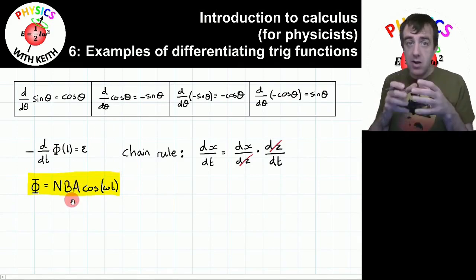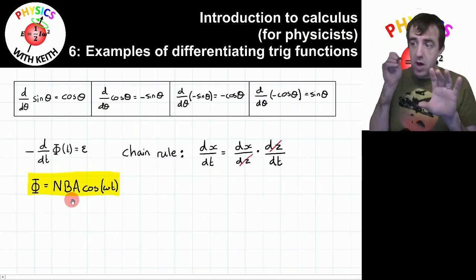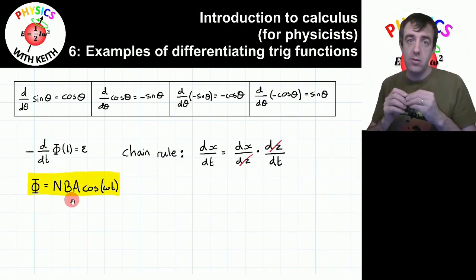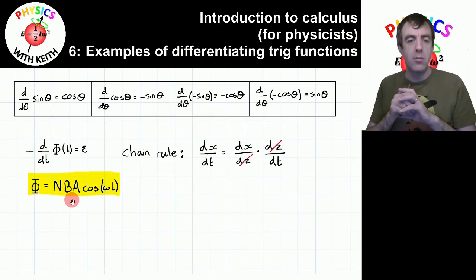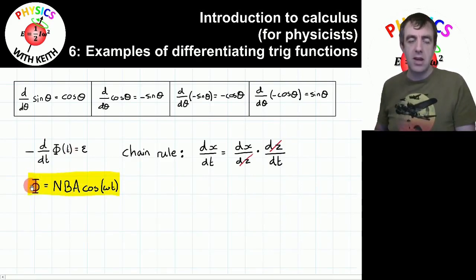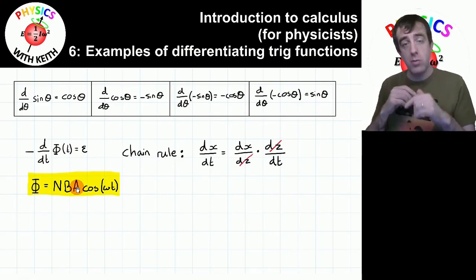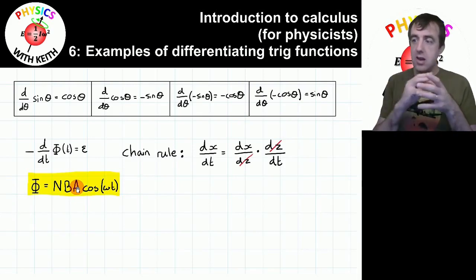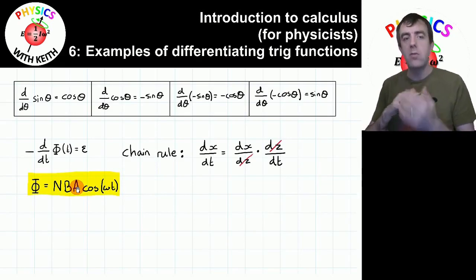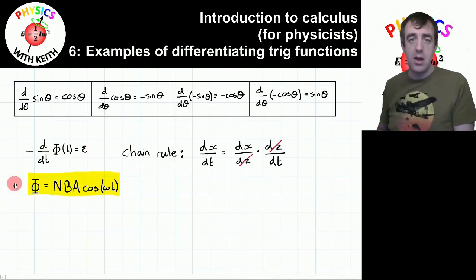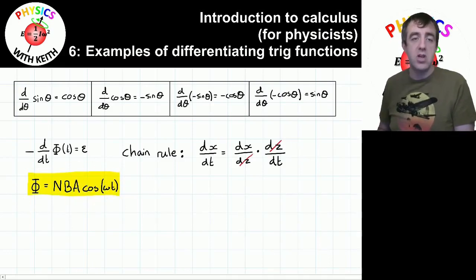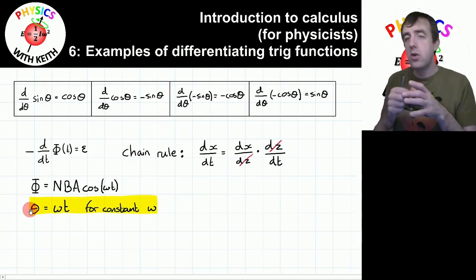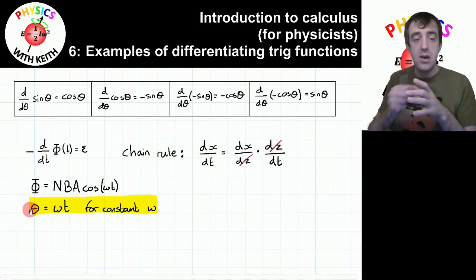If B and A are in the same direction — so the magnetic flux density is passing straight through the coil, parallel to the normal — then we have the maximum flux linkage. But if the coil is arranged so that the flux density is perpendicular to the normal of the coil, in the same direction as the plane of the coil, then there's no flux linkage. And if the coil is rotated through 360 degrees, it follows this expression, where the angular displacement of the coil relative to the magnetic flux density is theta.